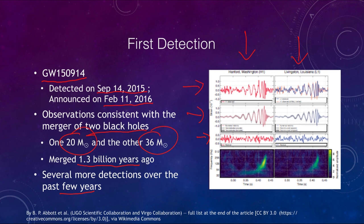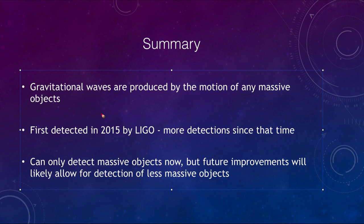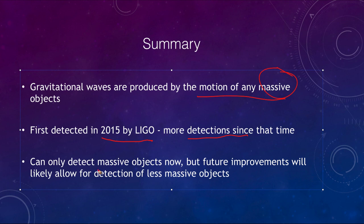In summary, gravitational waves are produced by the motion of any massive object. They were predicted by Einstein in 1916 and finally detected by LIGO almost a century later in 2015, with more detections since then. We are just getting started with this type of astronomy — currently we can only detect very massive objects colliding, but future improvements will allow for the detection of less massive objects over time.